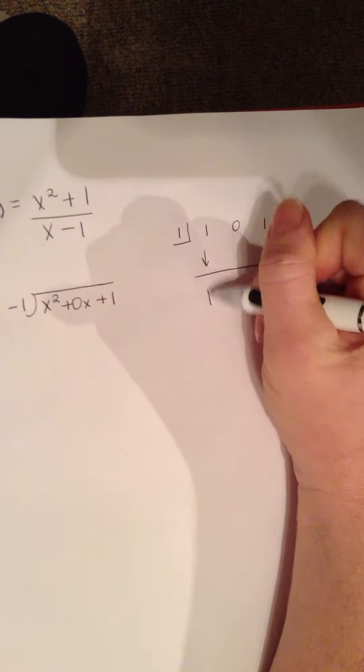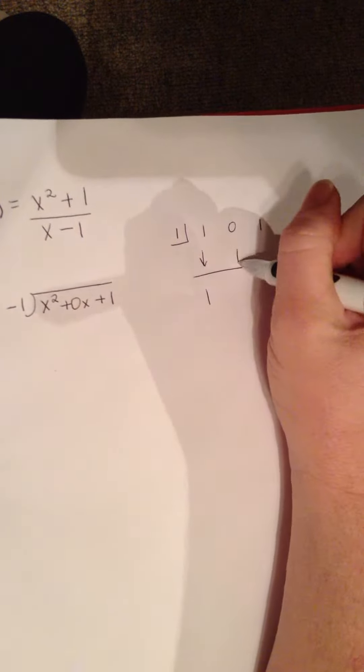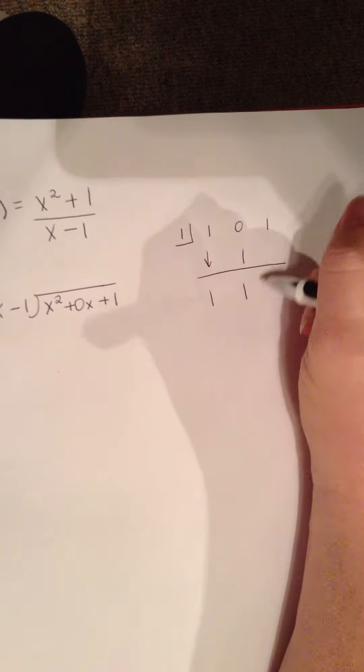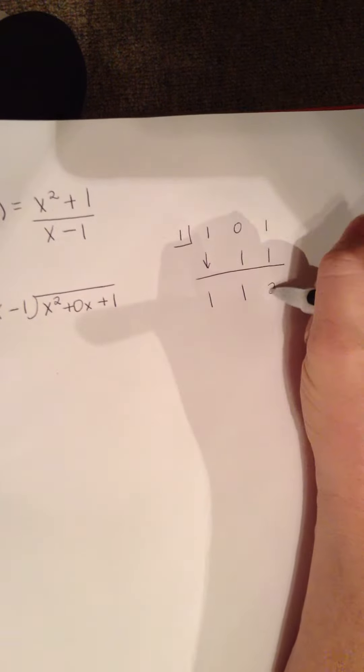Bring down the first one. One times one is one, add straight down. One times one is one, add straight down, and you get two.